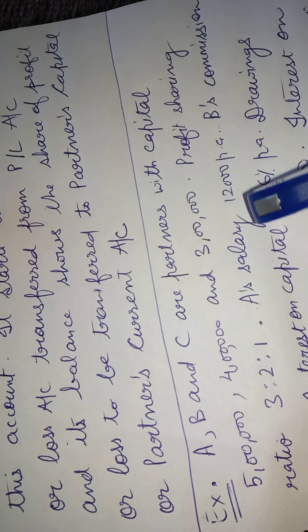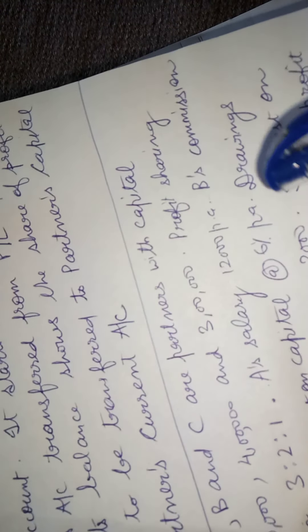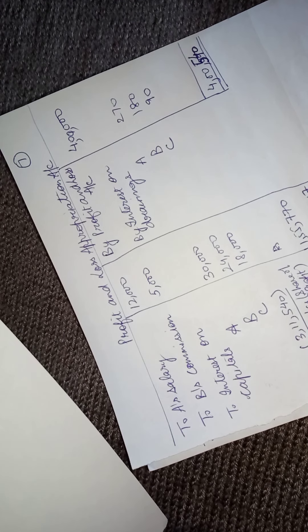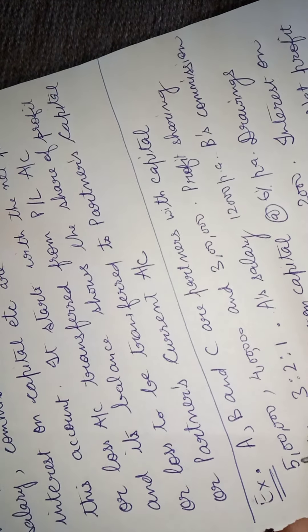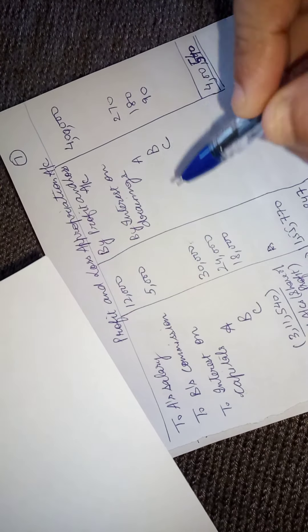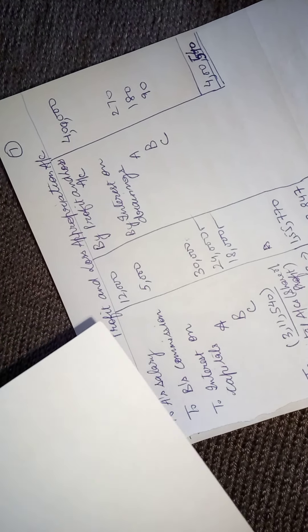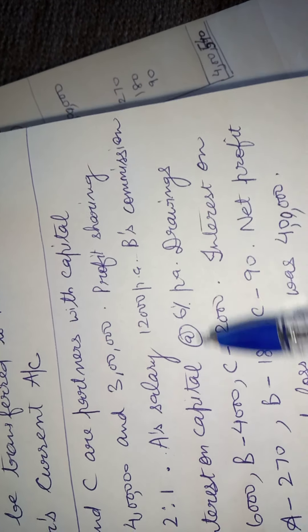The net profit of four lakh is entered on the credit side. A's salary of 12,000 is the first entry on the debit side, and B's commission of 5,000 is entered next. Then, interest on capital is calculated at 6% on the respective capitals: 5 lakh × 6% = 30,000 for A; 4 lakh × 6% = 24,000 for B; and 3 lakh × 6% = 18,000 for C. Drawings themselves are not entered in the Profit and Loss Appropriation Account — they go directly to the capital accounts or current accounts of the partners.